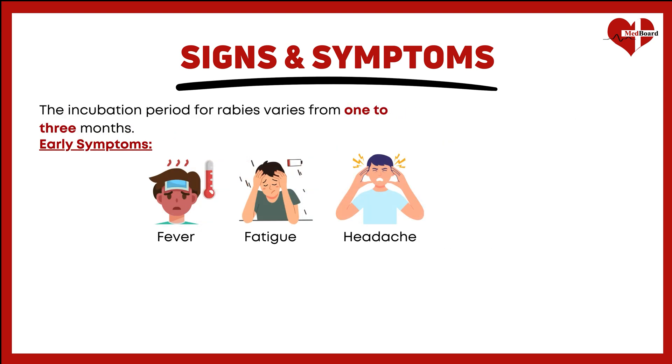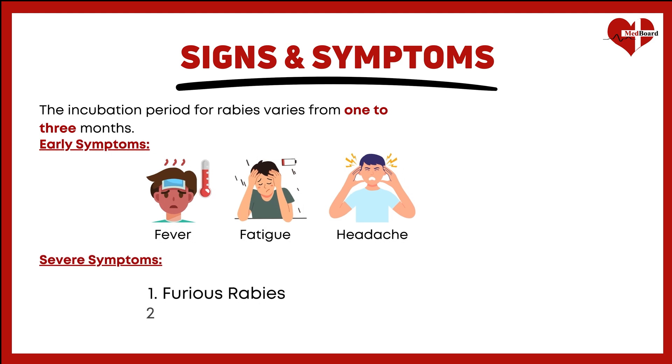As the virus spreads to the brain, more severe symptoms appear. These are often grouped into two forms: furious rabies and paralytic rabies.